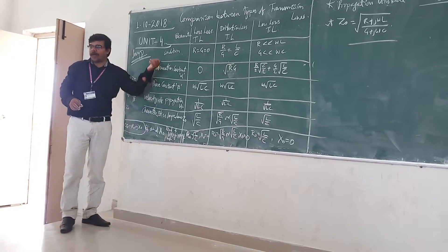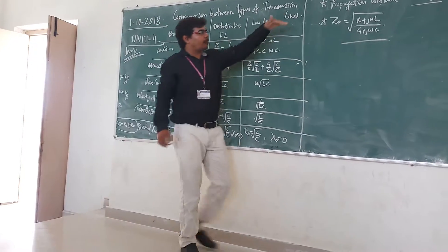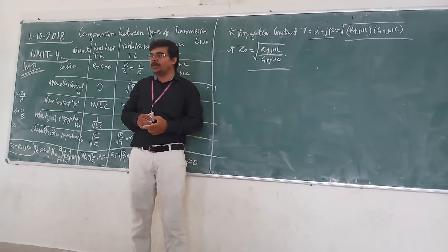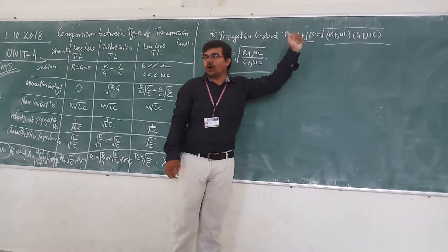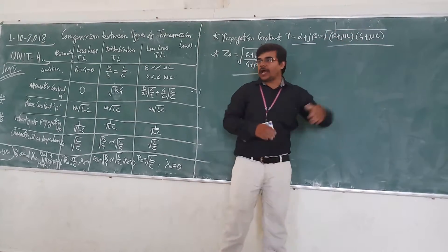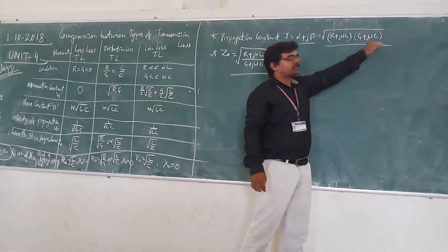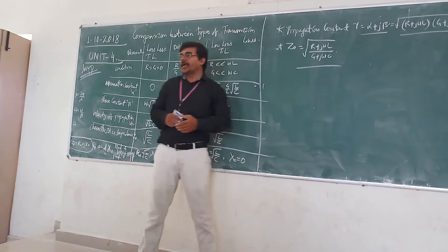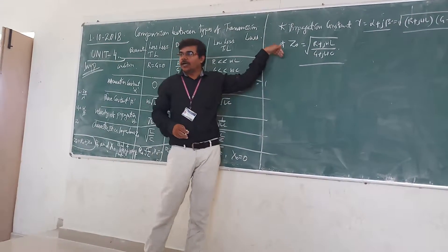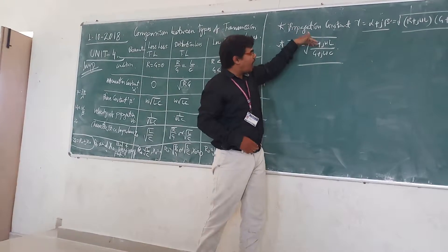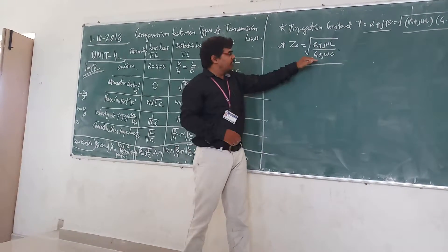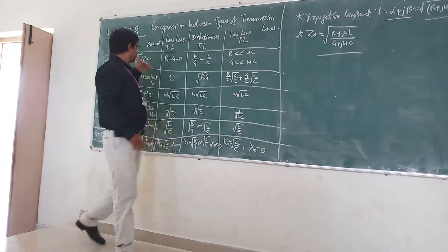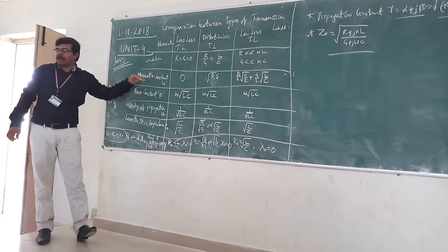Let us find the different parameters. The propagation constant is equal to alpha plus J beta, which equals the square root of (R plus J omega L) into (G plus J omega C). The characteristic impedance Z naught is equal to the square root of (R plus J omega L) by (G plus J omega C).